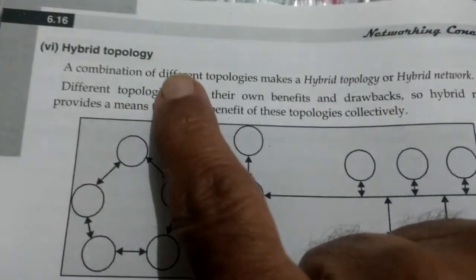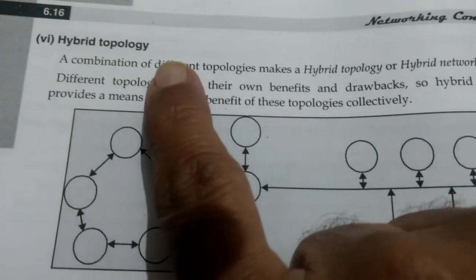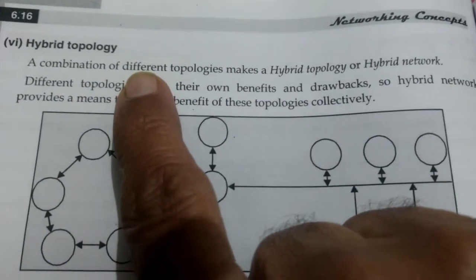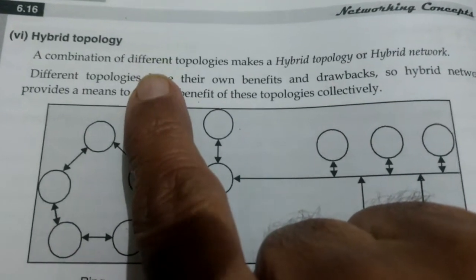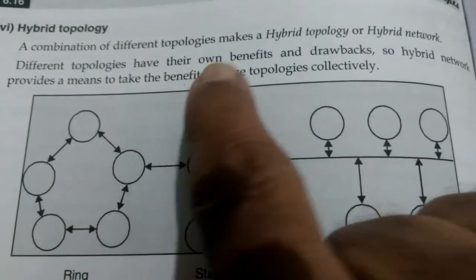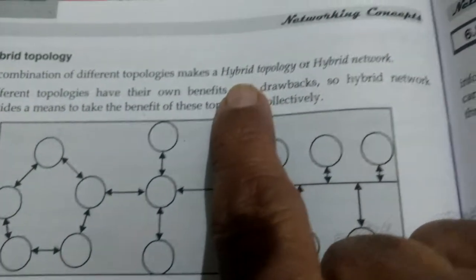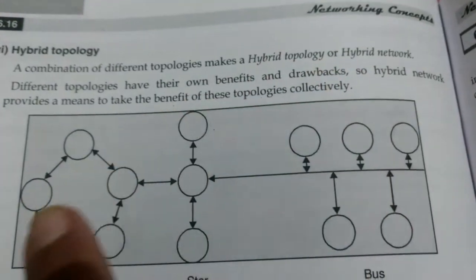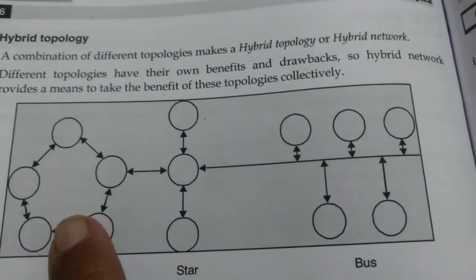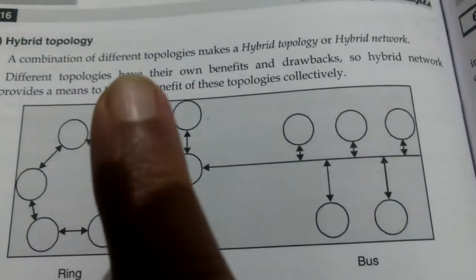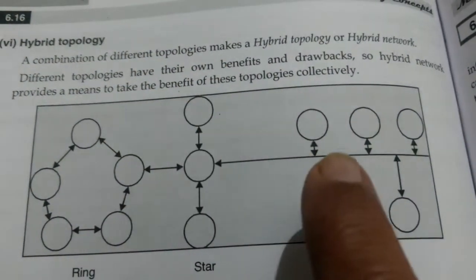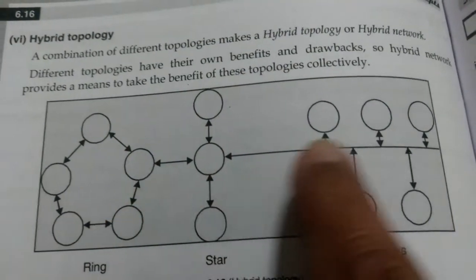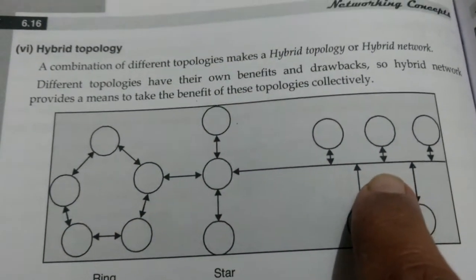We are going to do hybrid topology next. In different topologies, a combination of different topologies makes a hybrid topology. Like this ring topology, and this which is all like a bus — these are different topologies that have been mixed with each other.